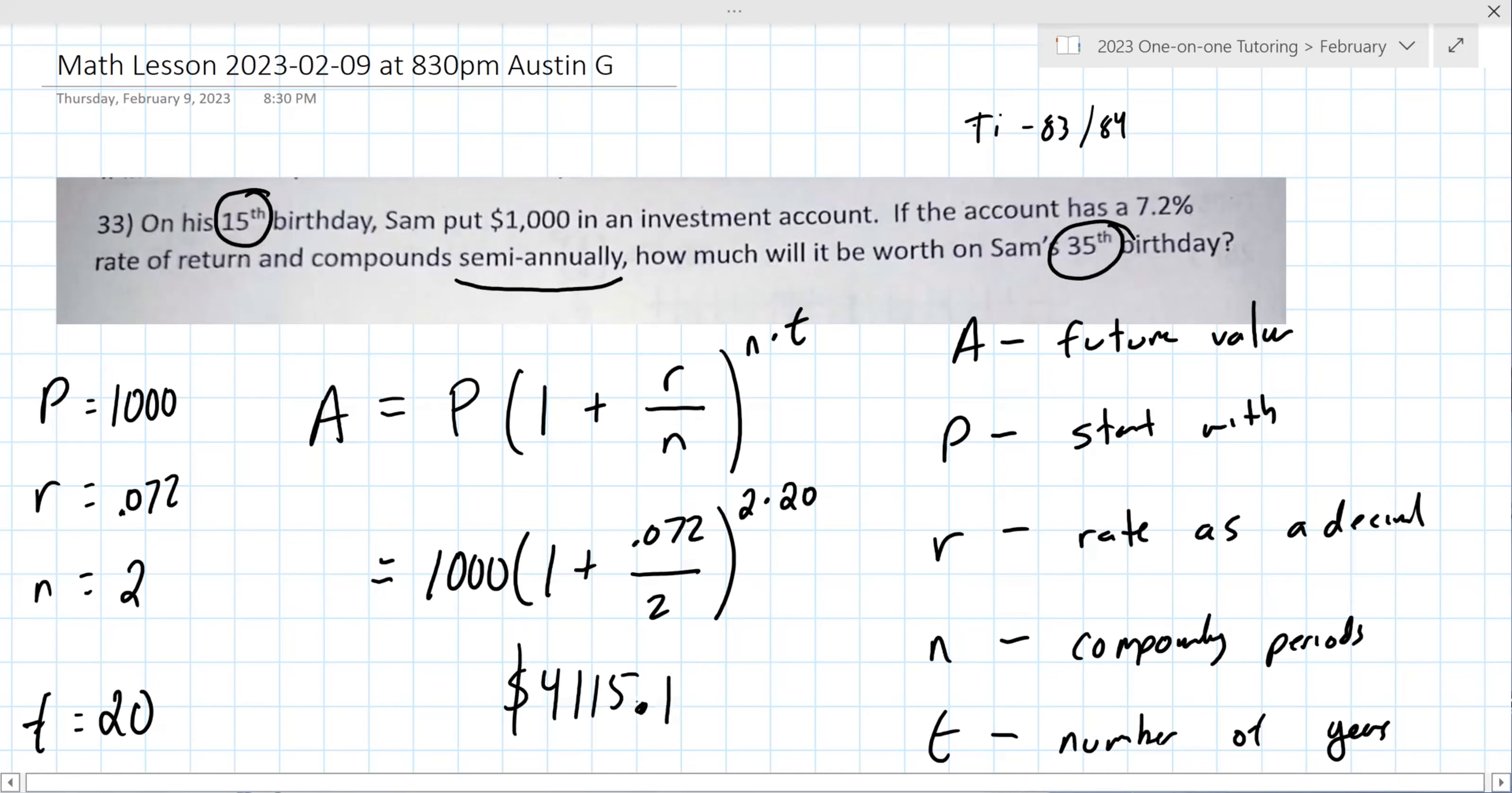Okay, I got 4,115.193. Okay, so it's money. So you have to stop after two decimal places. So give me the rounded answer. 4,115.19. Perfect.